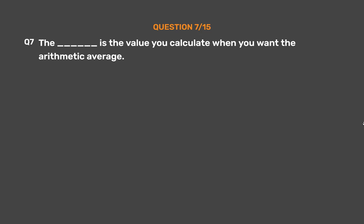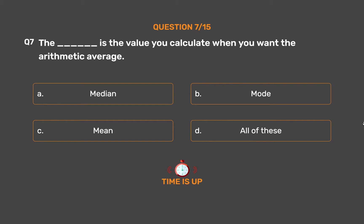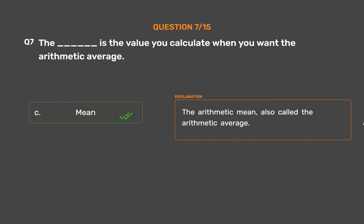Question number 7. Blank is the value you calculate when you want the arithmetic average. Option A: Median. Option B: Mode. Option C: Mean. Option D: All of these. The correct answer is Option C: Mean. The arithmetic mean is also called the arithmetic average.